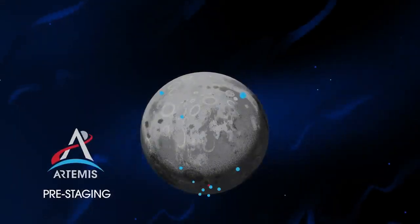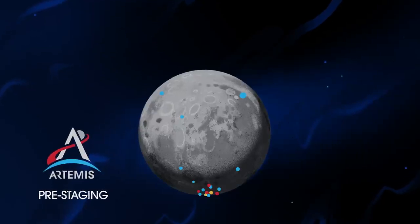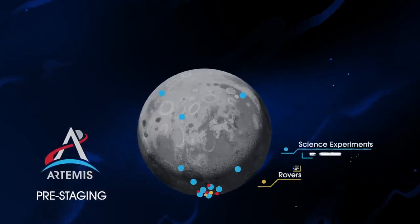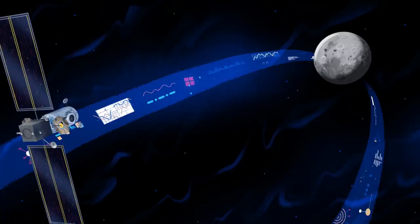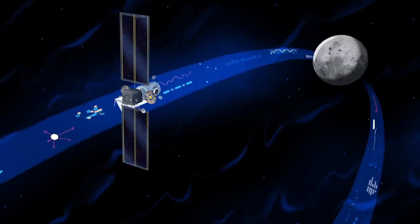Everything needed for lunar missions will be positioned in advance by commercial and international partners. This includes rovers, science experiments, and human-rated systems on the surface. But it also includes a dedicated lunar station in orbit around the Moon called Gateway.